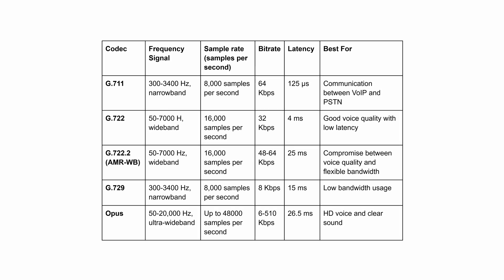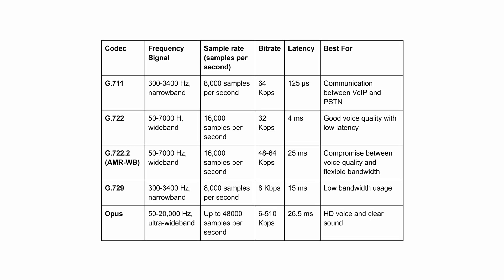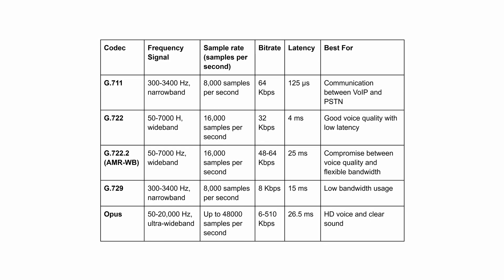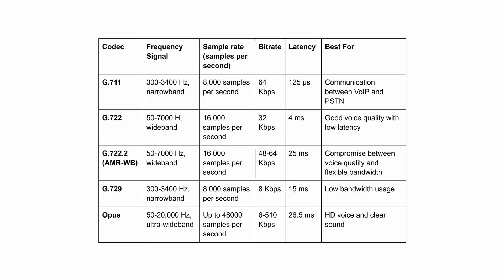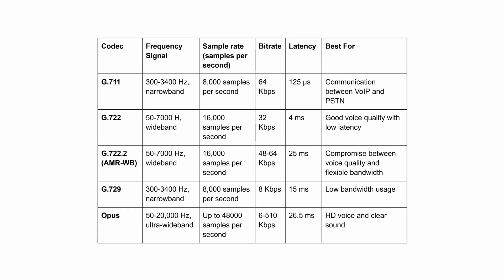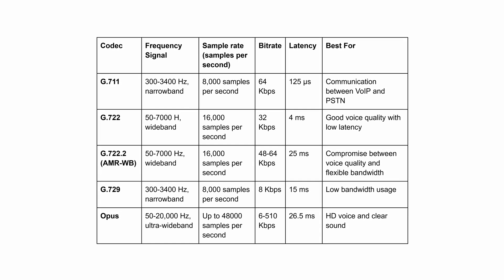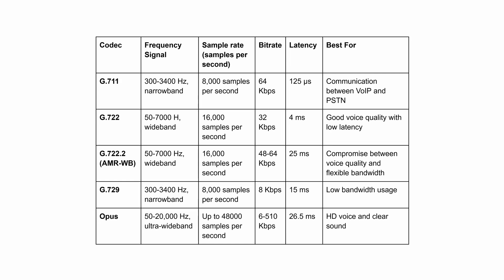G722 is a wideband codec that offers a high bit rate with high bandwidth requirements, supporting 50 to 7,000 hertz and capable of HD voice. G722.2 is a wideband VoIP codec that can shift between a 48, 56, or 64 kilobits per second bit rate, depending on how much bandwidth the telephone network has available.